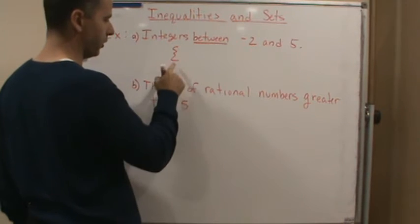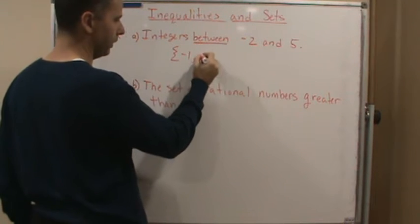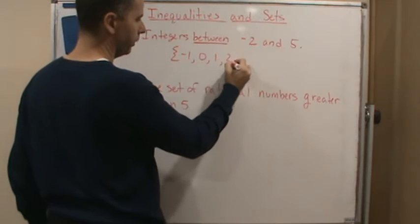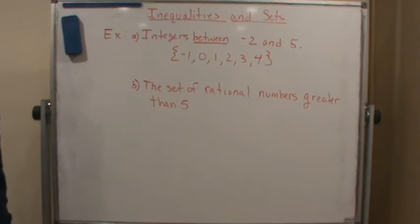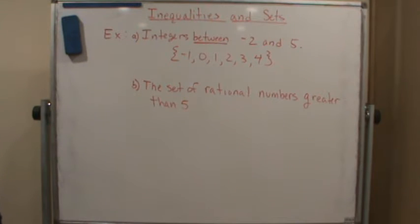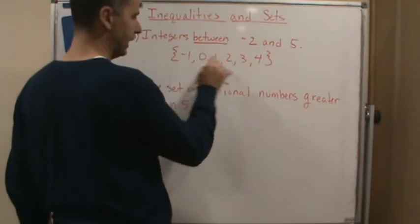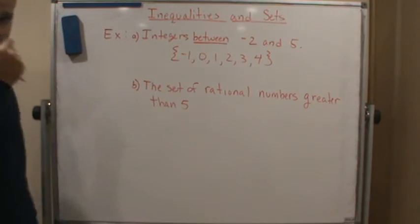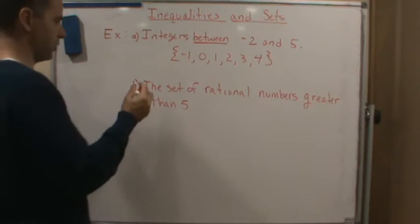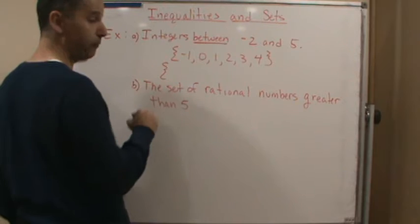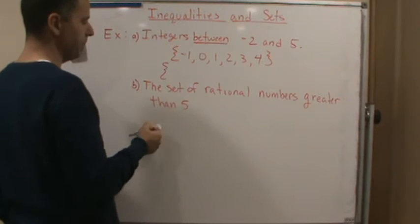Which means our list would start with the curly brace, which is going to start with negative 1, 0, 1, 2, 3, and 4. And so that would be using the roster method or list method. Notice that I begin and end with the curly braces, the set braces. Now if I want to do this with set builder notation...